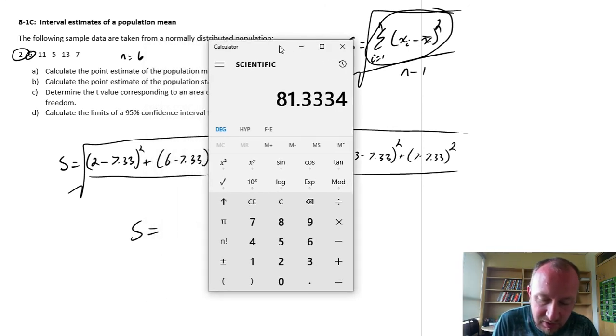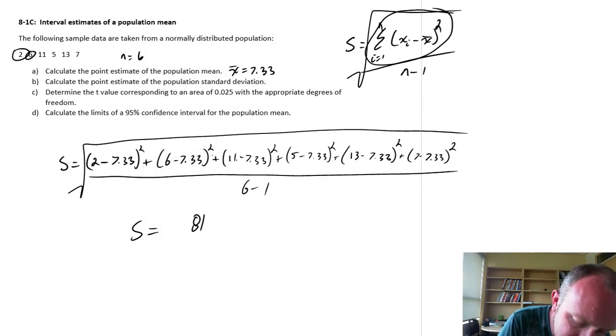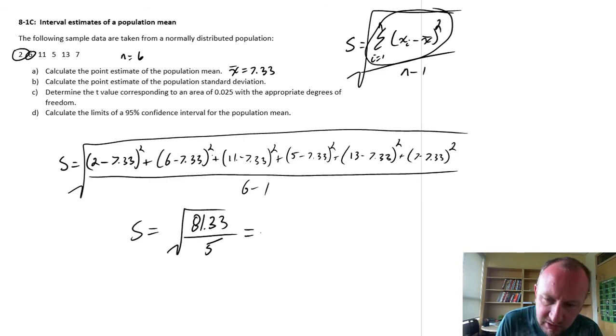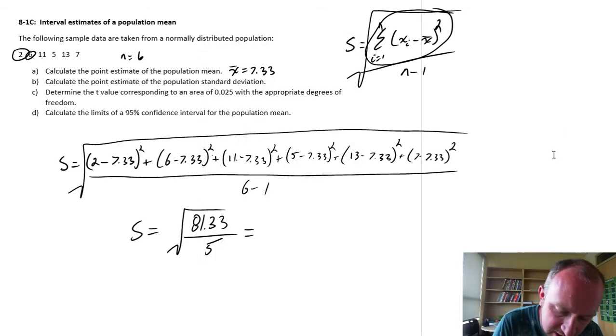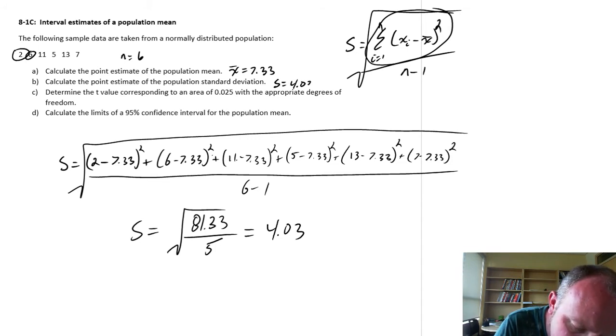So that last one, 7 minus 7.33 squared equals, so there's our numerator, it's 81.33. So this is 81.33, divide that by 5, and square root it. So this divided by 5 is 16.27, square root that, and I have 4.03. So there's S is equal to 4.03.